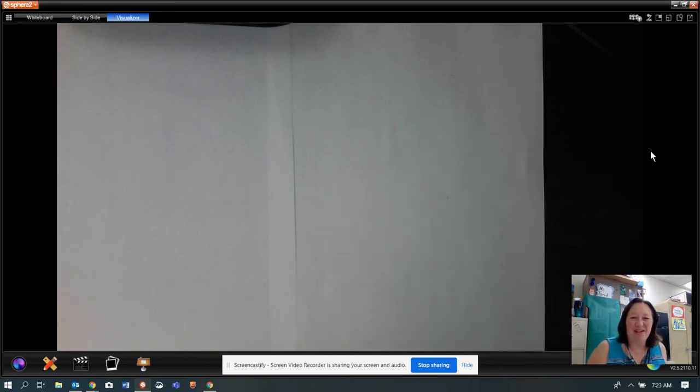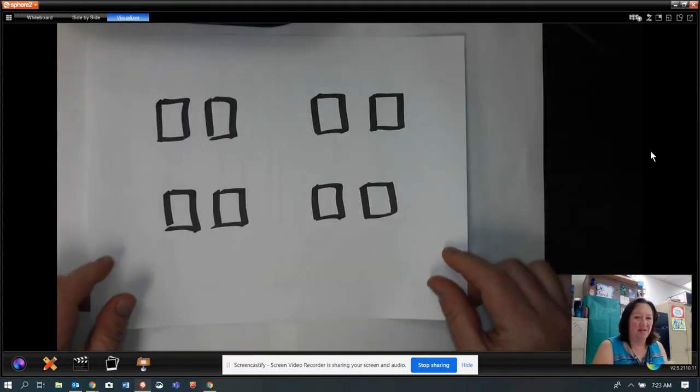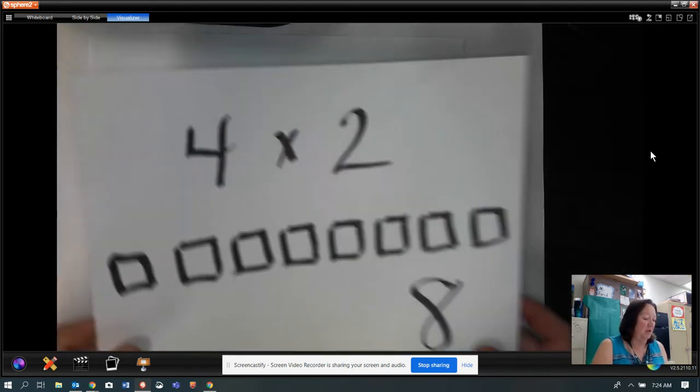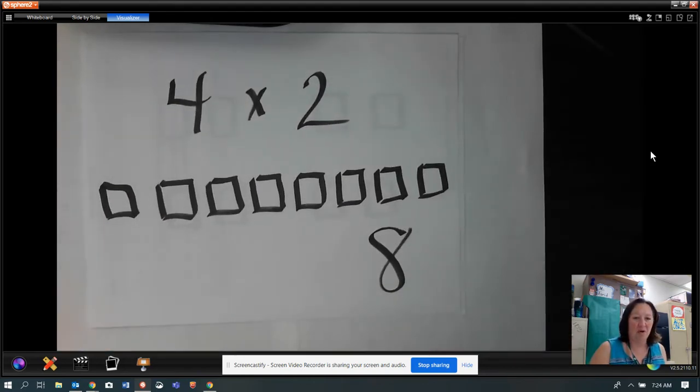We're going to take a look at a couple more problems with whole numbers, just as a reminder. If I model this and say there are four groups, and each group has two, then my multiplication problem would look like four times two, four groups of two. I took those and put them together in one big group, and I have eight. Four times two is eight.